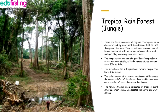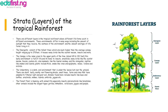Other jungles are located in central and west Africa. Strata, or layers, of the tropical rainforest: there are different layers in the tropical rainforest where different life forms exist in different environments. These environments differ in many ways, including the amount of sunlight they receive, the openness of the environment, and the amount and type of life forms living in them.